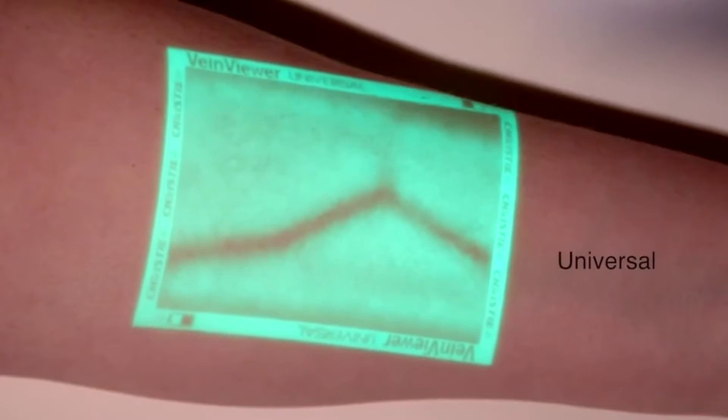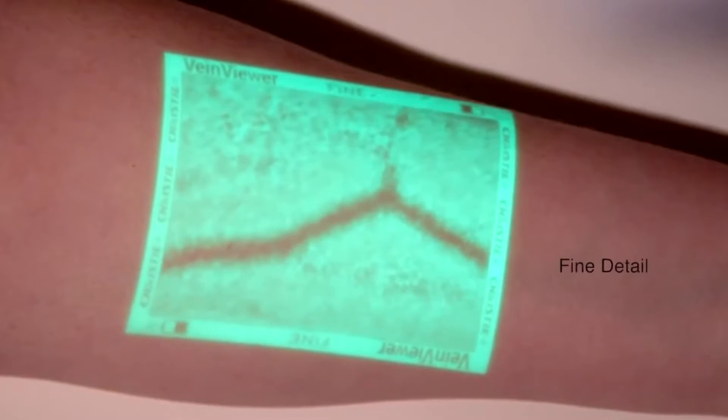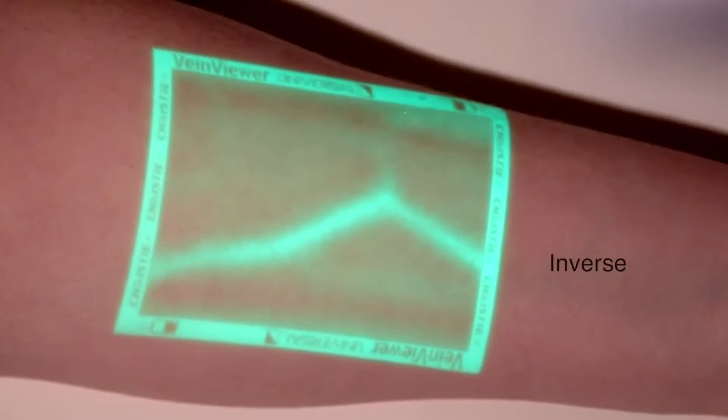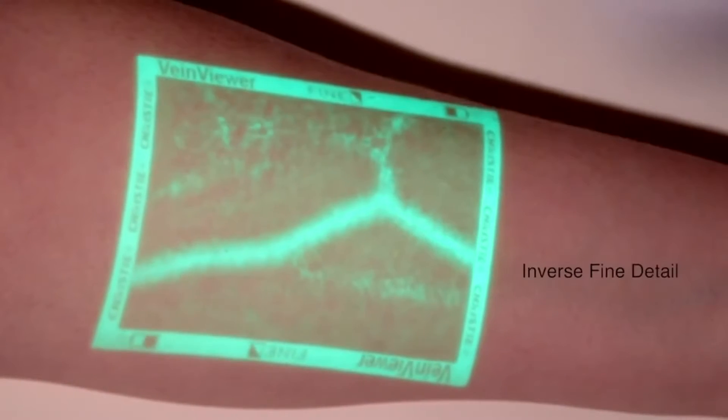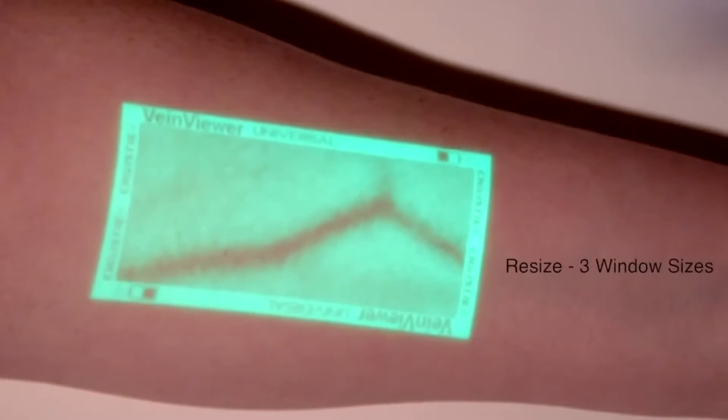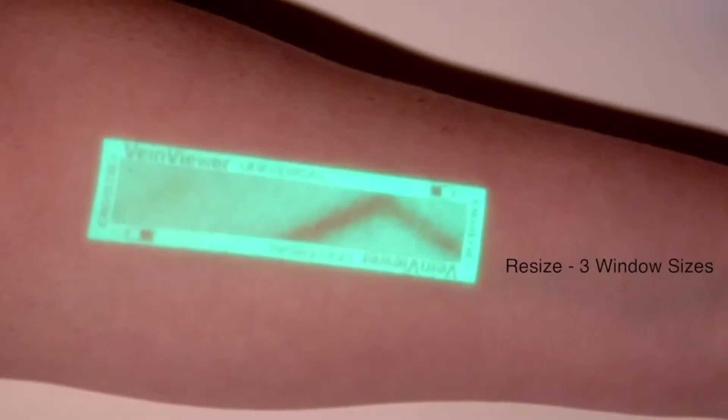Through the use of near-infrared technology, VeinViewerFlex can project a real-time image of the venous pathway directly onto the surface of the skin. The available modes are suitable for a range of skin tones and applications.